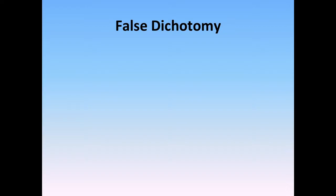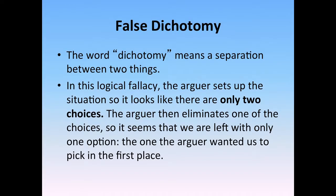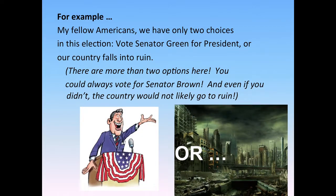The next one is the false dichotomy. The word dichotomy includes the prefix 'di,' meaning a separation between two things. What's happening in this logical fallacy is that the arguer sets up the situation so that it looks like there are only two choices. This is a fallacy because there usually are many more than just two choices in any given scenario. If you have a weak argument, making it seem like there are only two choices is useful: eliminate one, and it seems like you're left with only one option — the one the speaker wants you to pick. We saw a whole lot of this on the campaign trail.